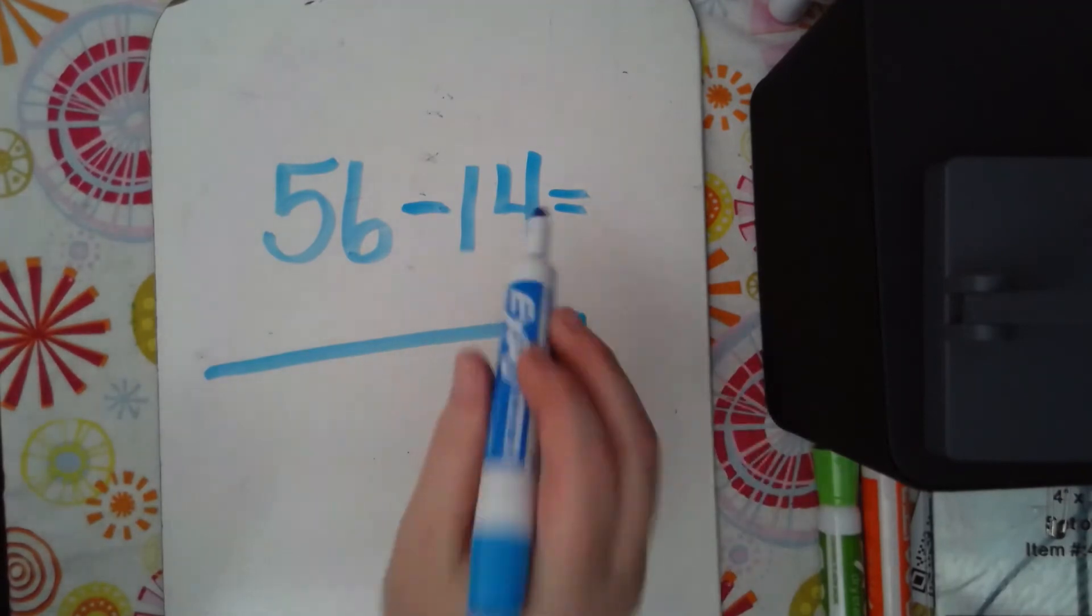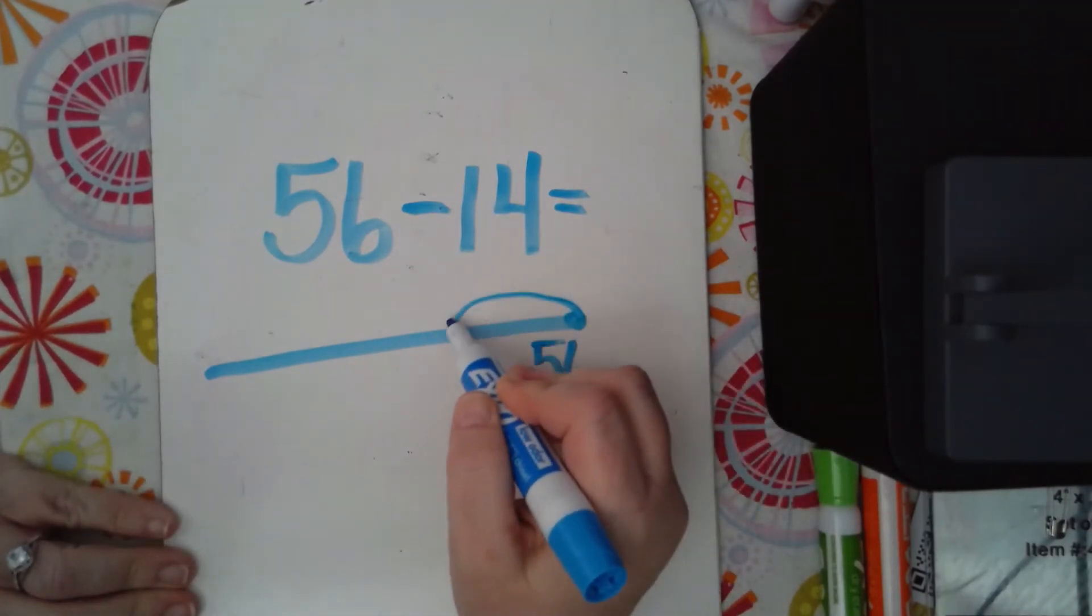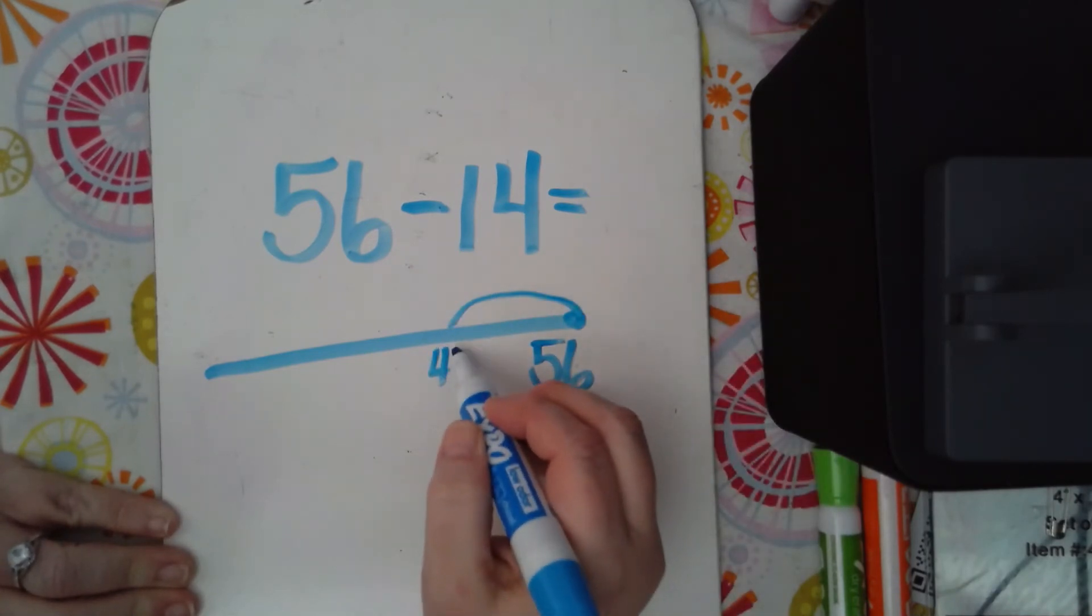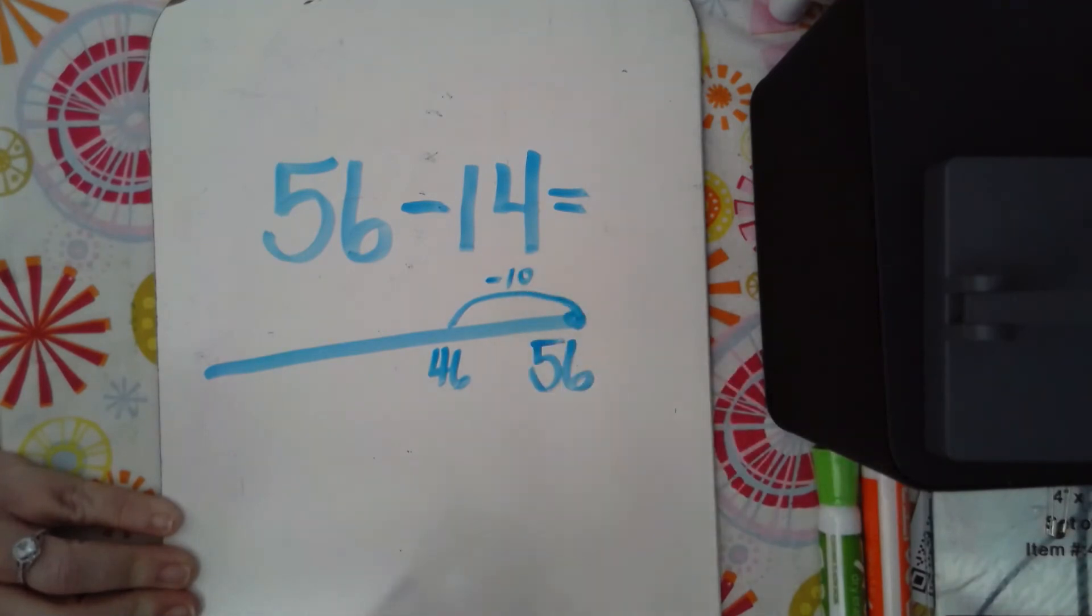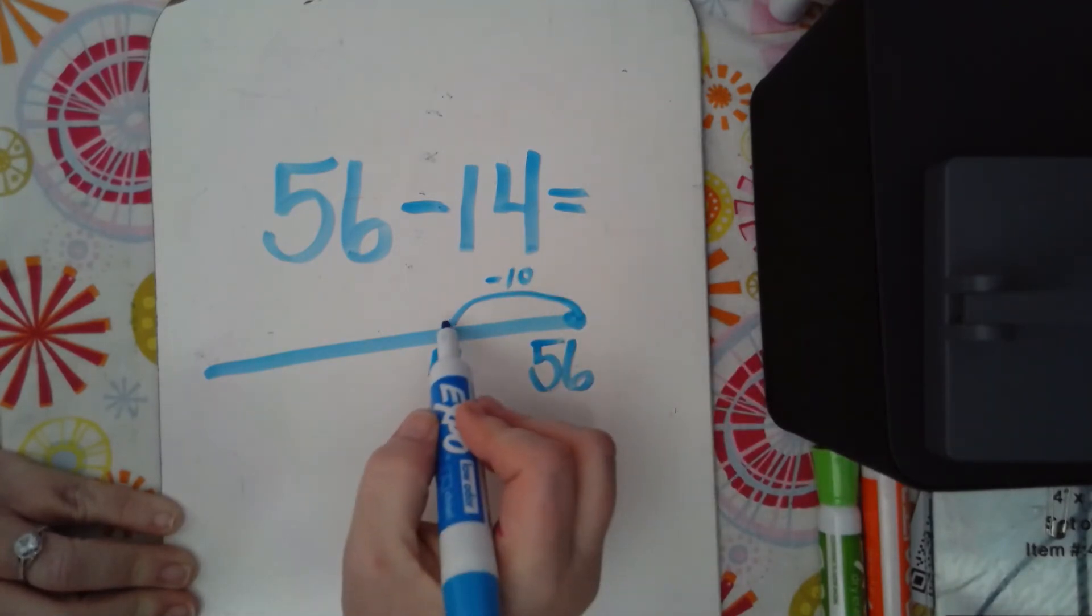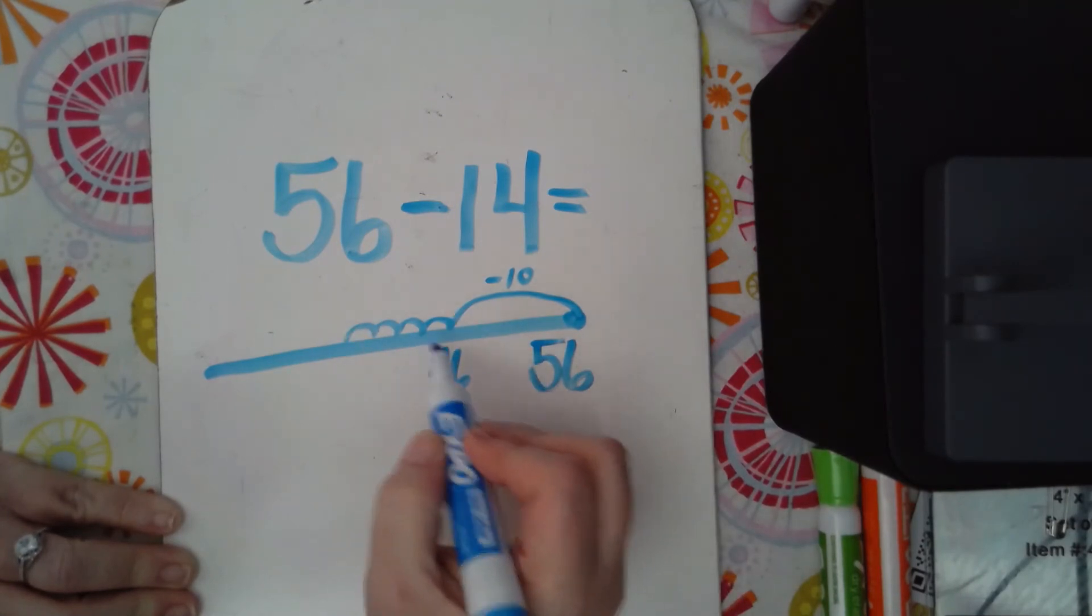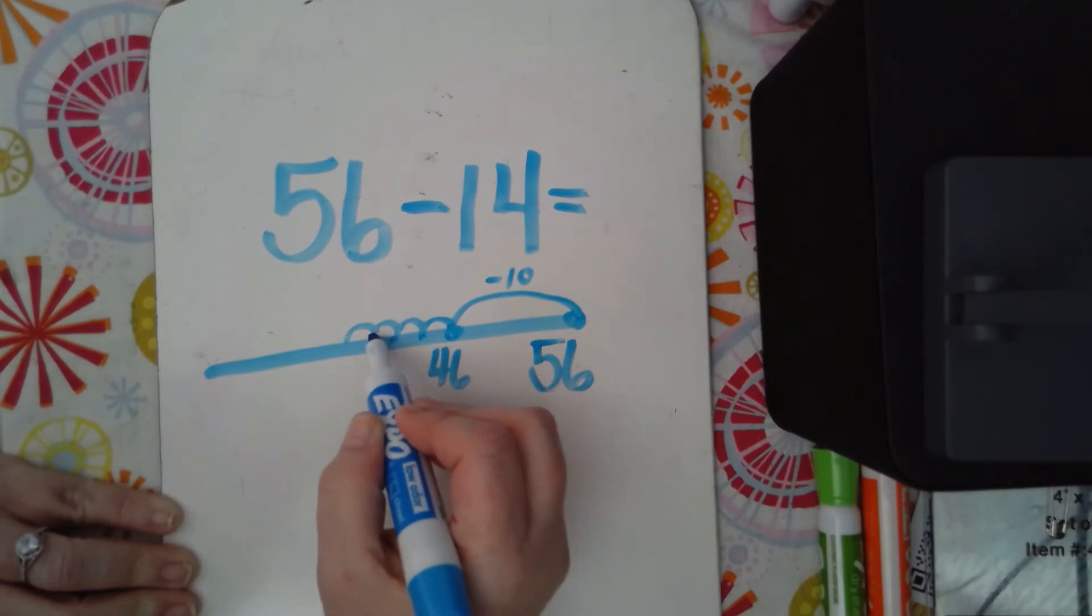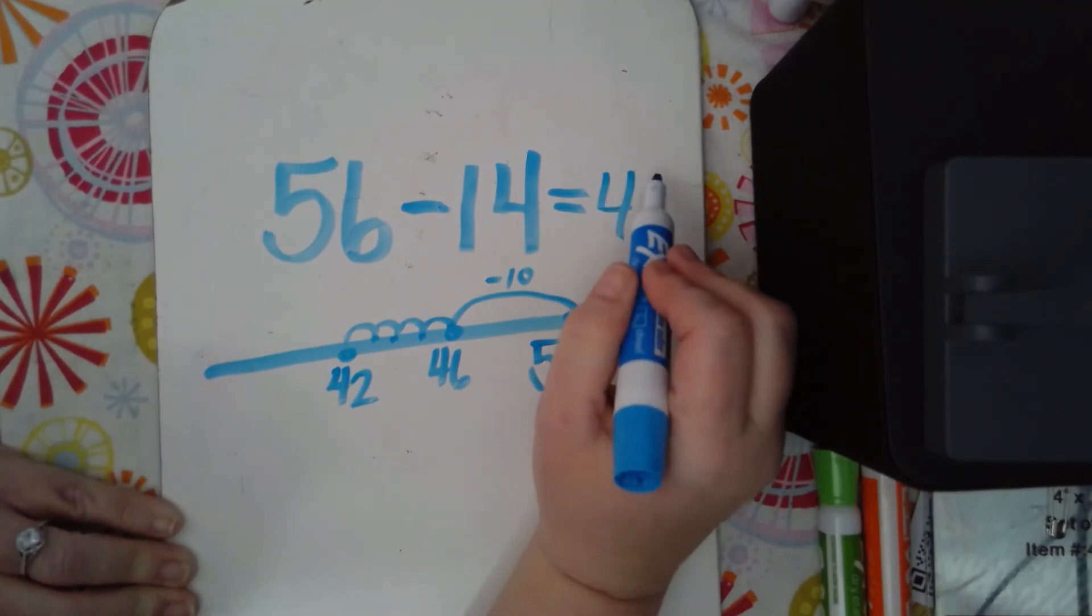So if I had 56 and I take away 14. Alright, I'm going to do 14 as 10 and 4. So I'm going to take a jump back of 10, which would put me at 46. That's minus 10. And then I'm going to take 4 more jumps back. 1, 2, 3, 4. And that would put me at, let's see, 46. That makes 45, 44, 43, 42. So my answer would be 42.